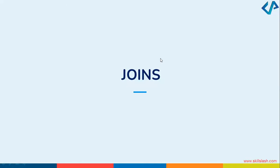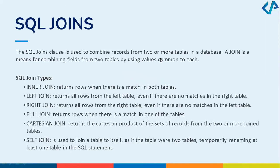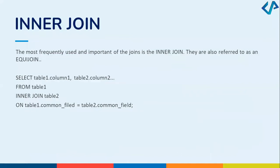There are different types of joins: inner join, left join, right join, full join, cartesian join, and self join. Let's talk about these joins one by one.